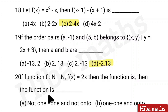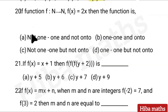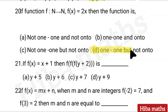Answer: (−2, 13). Last question, twentieth: If function f: N → N, f(x) equal to 2x, then the function is — not one-to-one and not onto; one-to-one and onto; not one-to-one but onto; one-to-one but not onto. Answer: option D.